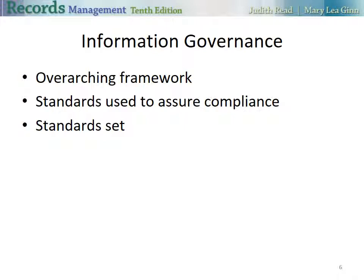Information governance, or IG, is the overarching framework within which the records and information management program resides. Measures or standards are used to assure compliance in the creation, use, retention, and disposition of organizational information. This is the life cycle that we studied in Chapter 1. Standards are set for managing all records.